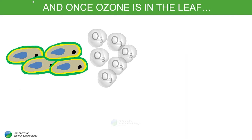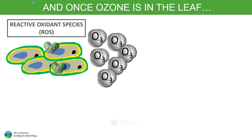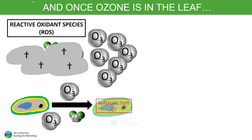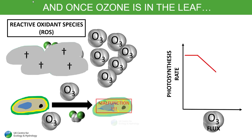When ozone gets into the leaf, it forms other damaging molecules. These are reactive oxidant species, ROS. Together with ozone, ROS can cause outright cell death. Even without death, ozone impairs the function of cells, their metabolism. This leads to physiological effects on the plant such as reduced photosynthesis.